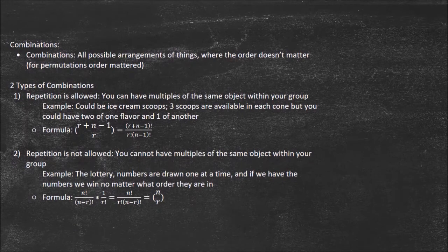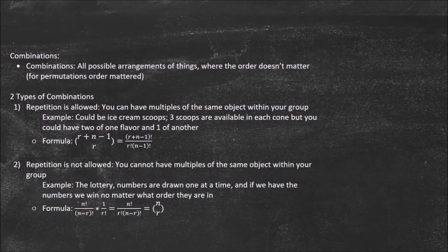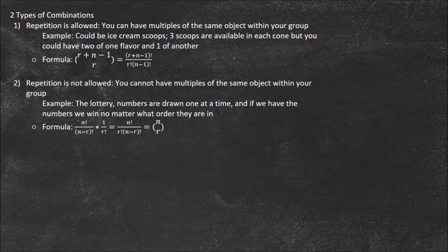Just notice the difference between permutations and combinations. Combinations are where the order doesn't matter, and permutations — the order does matter. I like to think of combinations as asking how many different groups can I get from some larger set, whereas permutations are asking how many different arrangements can I get in general.